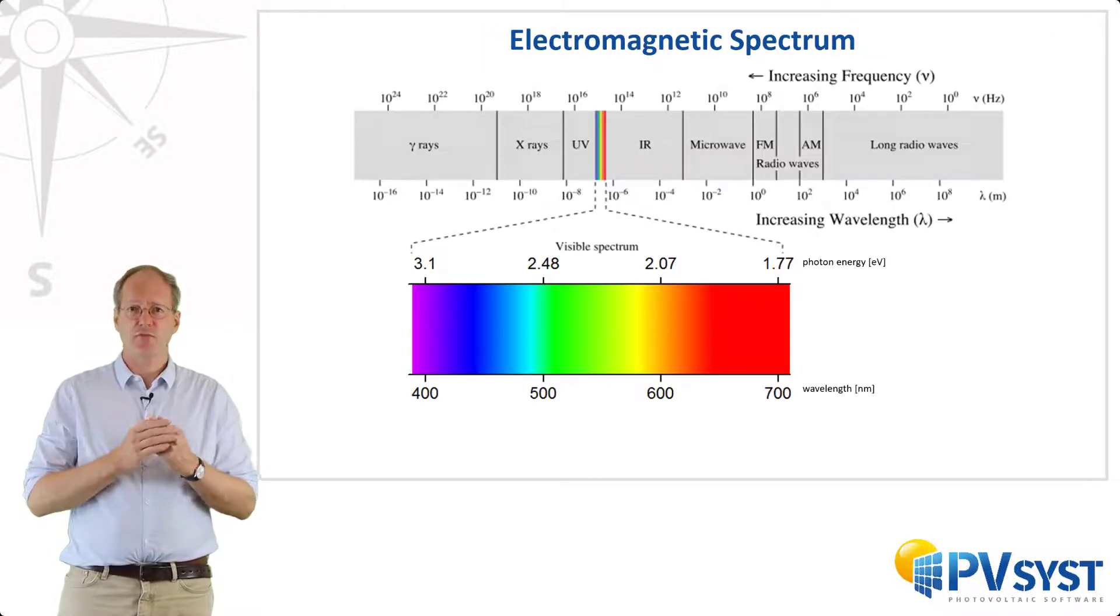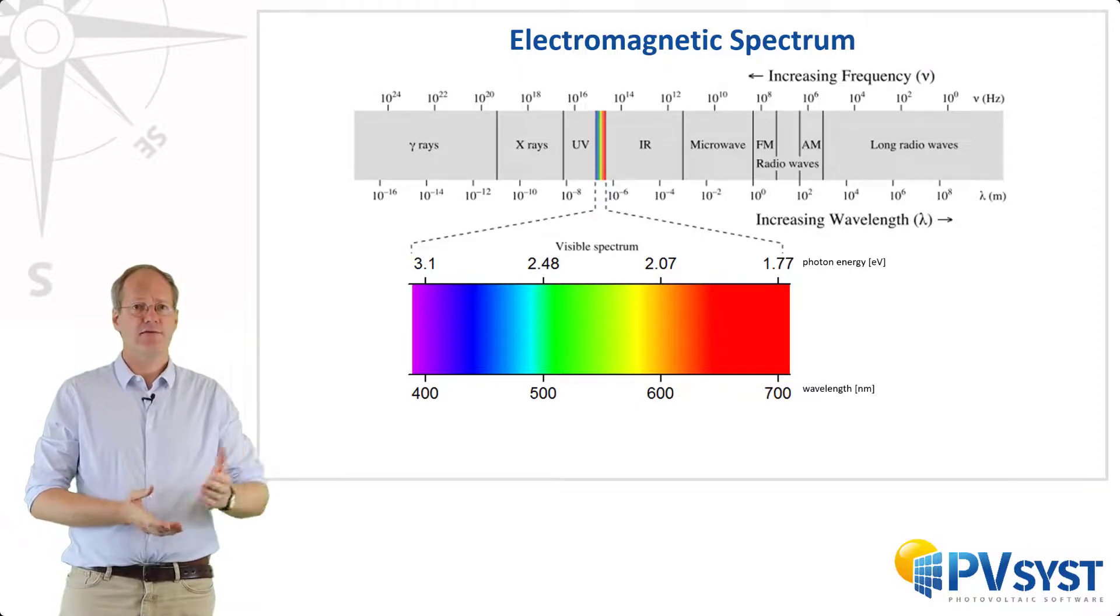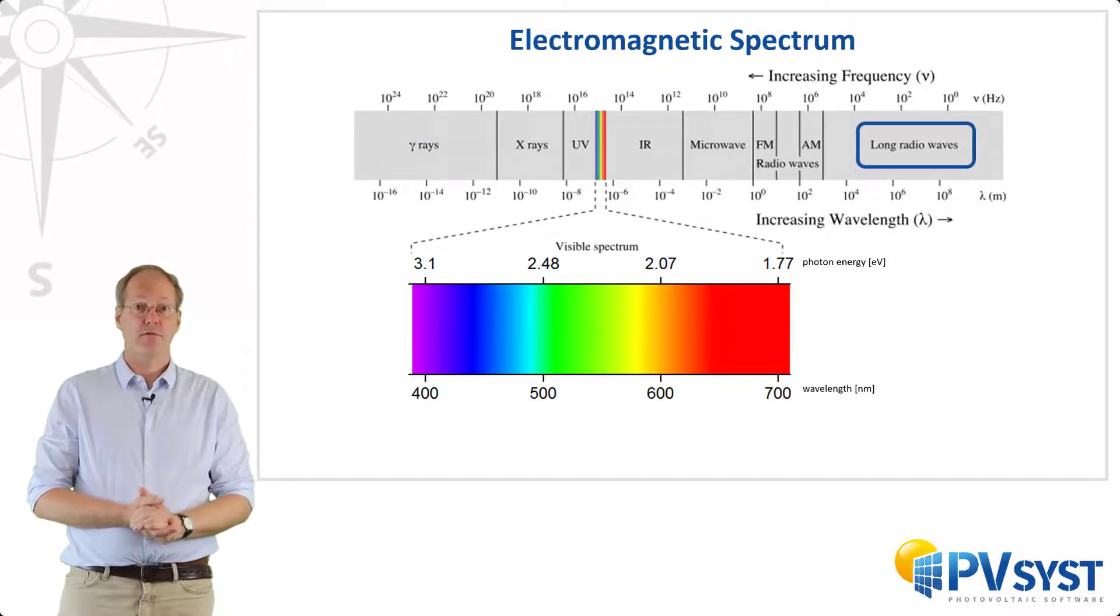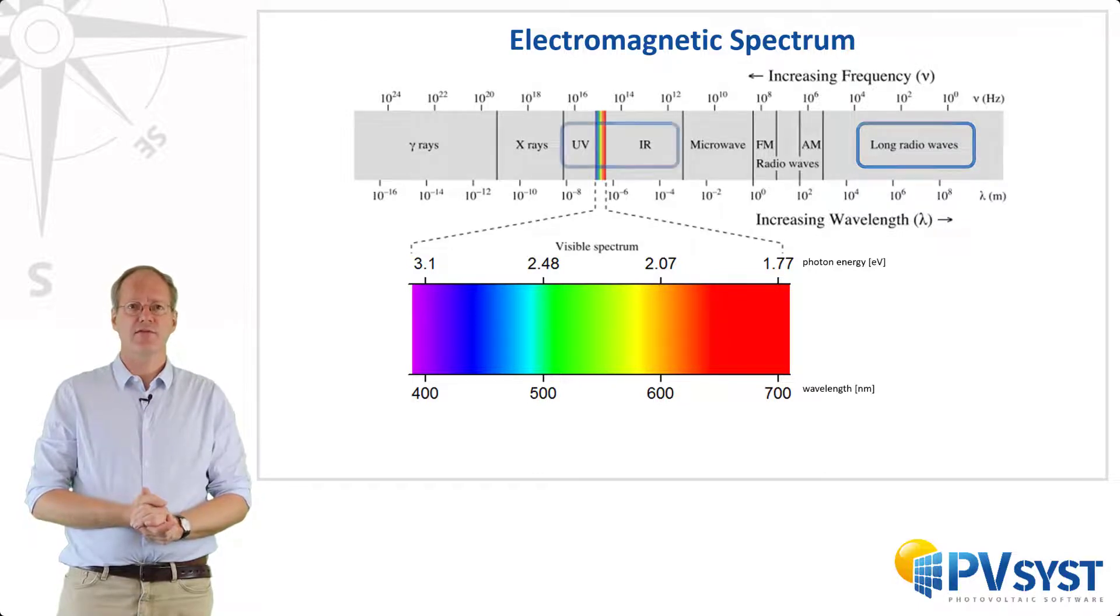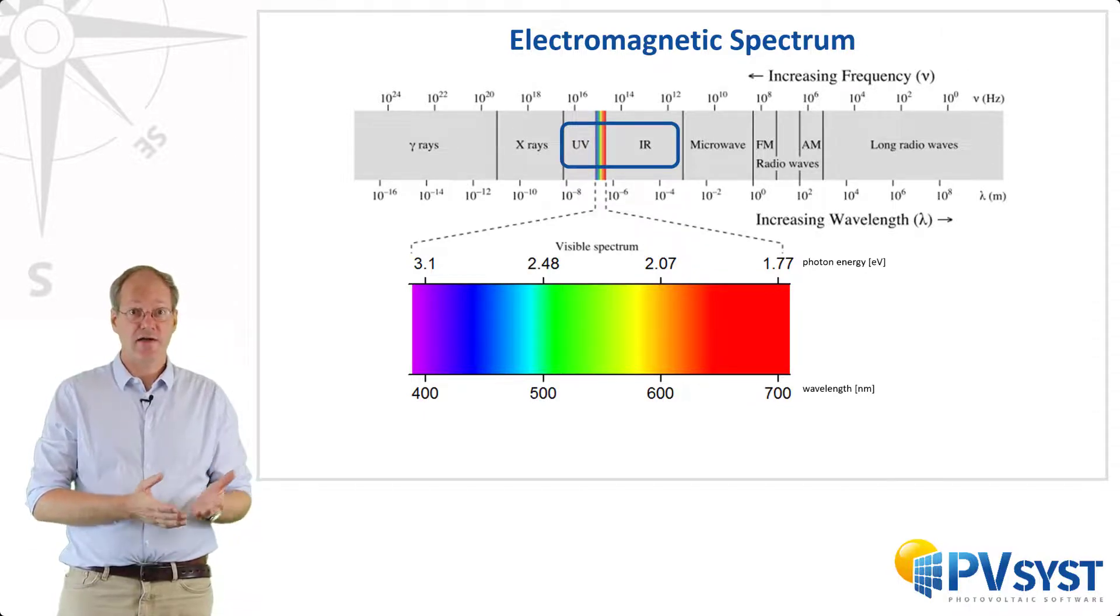Visible light is just one small part of the total electromagnetic spectrum. Here you can see that the spectrum ranges from gamma rays all the way up to long radio waves. However, for photovoltaic engineers, we are typically only concerned with visible, ultraviolet, and infrared waves. That's because this is what the Sun provides us with, and is the spectrum of energy that we try to convert into electricity with photovoltaics.